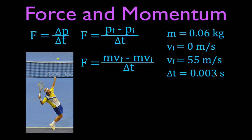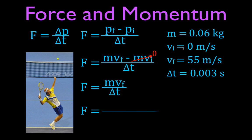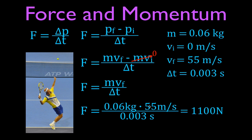Since the initial velocity is 0, the mass times initial velocity term is 0. That means the force applied to the ball equals mass times final velocity divided by change in time. Substituting in: force equals 0.06 kilograms times 55 meters per second, divided by 0.003 seconds. The force applied to the ball is 1,100 newtons — that's a considerable force, about 247 pounds of force.